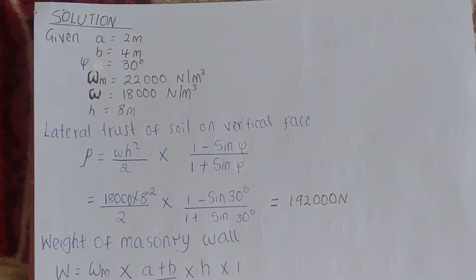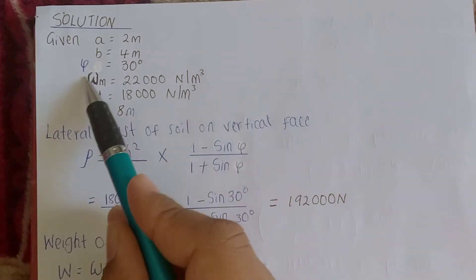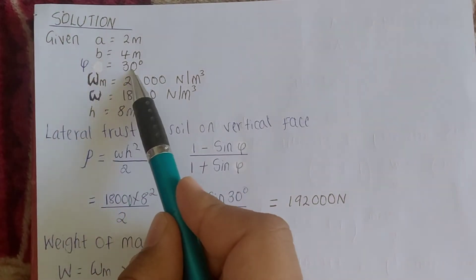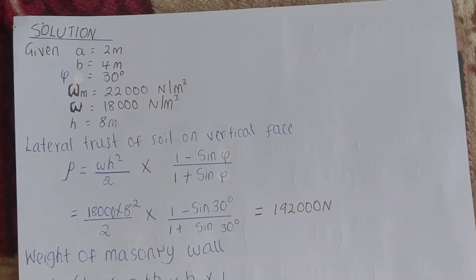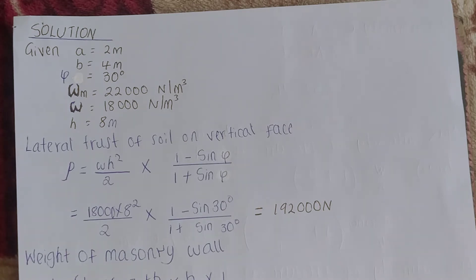Given: top width a = 2 meters, bottom width b = 4 meters, angle of repose = 30 degrees, unit weight of masonry wall = 22,000 Newtons per meter cubed, unit weight of soil = 18,000 Newtons per meter cubed, and the height of the wall = 8 meters. First, we shall calculate the lateral thrust of the soil on the vertical face.